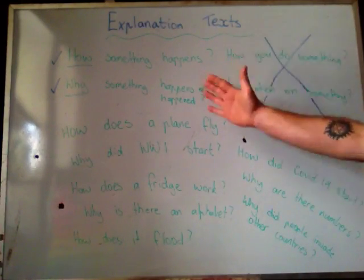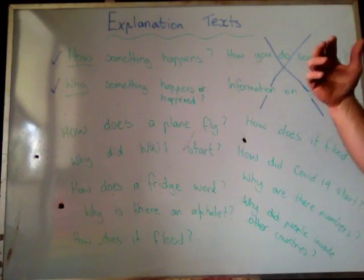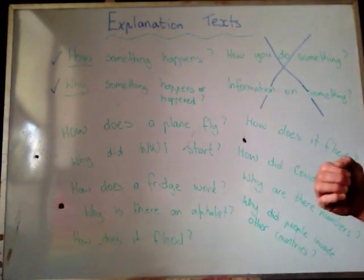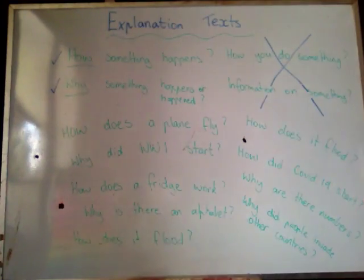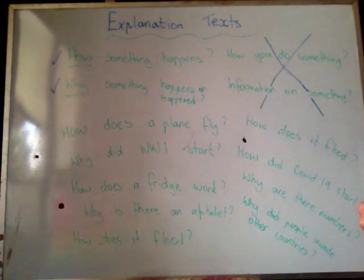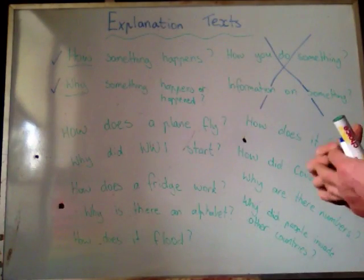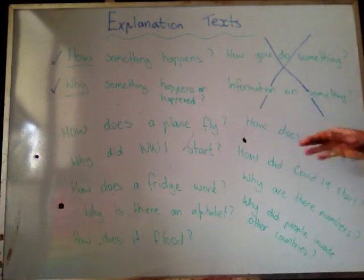So please do not get them confused. In your head, think: how and why things happen. How does a popcorn maker work? How does a TV work? How does something happen? If you're thinking how to do something, that's a procedural. If you're giving information about things, that's an information report. Please do not get those confused.